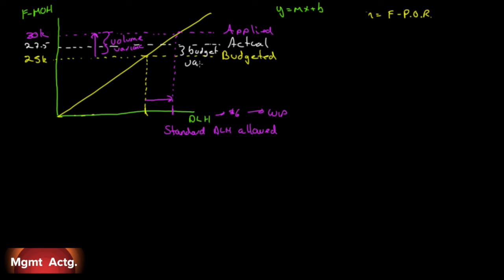The budget variance measures our spending control on fixed overhead costs. We spent $2,500 more than budgeted — and we have to ask questions about that, because fixed costs aren't supposed to vary. The difference between actual and applied is what we over-applied. Based on our budget of $25,000, we should have over-applied $5,000 since we applied $30,000. However, we only over-applied $2,500 because of the $2,500 unfavorable budget variance.